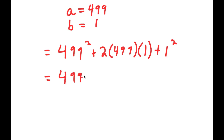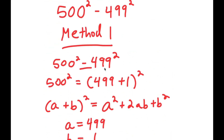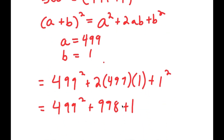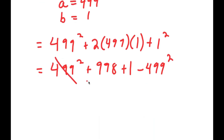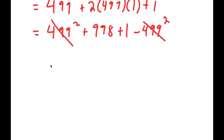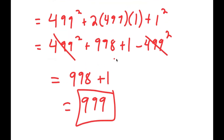This is equal to 499 squared plus 998 plus 1. Remember at the end we have negative 499 squared, so we add that back in. 499 squared minus 499 squared cancels out, leaving 998 plus 1, which equals 999. That is the first method.